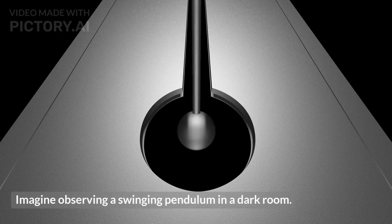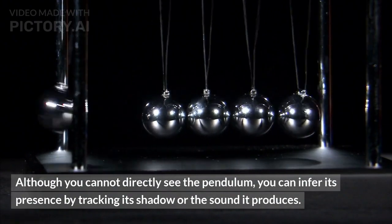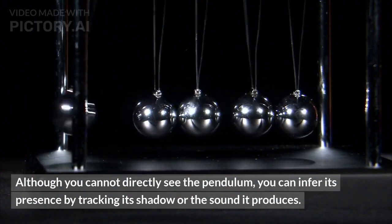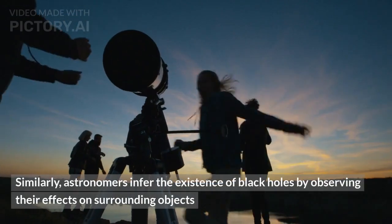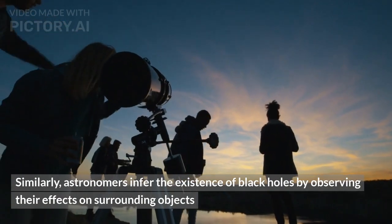Imagine observing a swinging pendulum in a dark room. Although you cannot directly see the pendulum, you can infer its presence by tracking its shadow or the sound it produces. Similarly, astronomers infer the existence of black holes by observing their effects on surrounding objects.